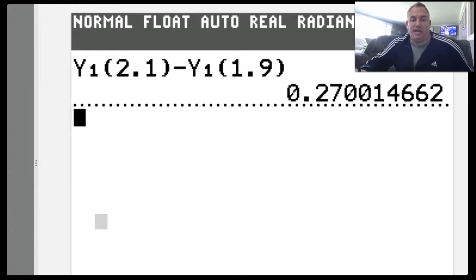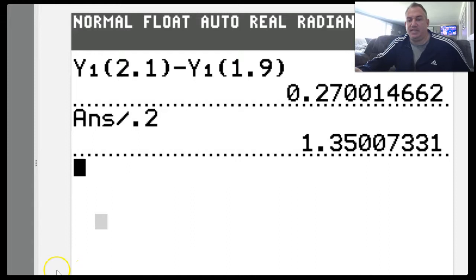And then now we're going to divide by the difference of our t's, or difference of our x's if you want to call it, of 0.2. And we have an estimate for my instantaneous rate of change to be approximately 1.35.